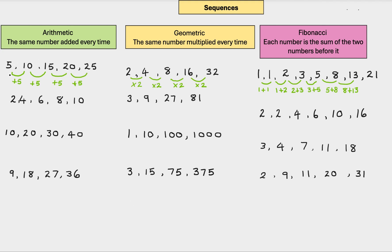So I've done one here, 5, 10, 15, 20, 25. Now as you can see, using the rule of arithmetic, I've added the same number every time. So 5, 5, 5 and 5. Nice and straightforward.